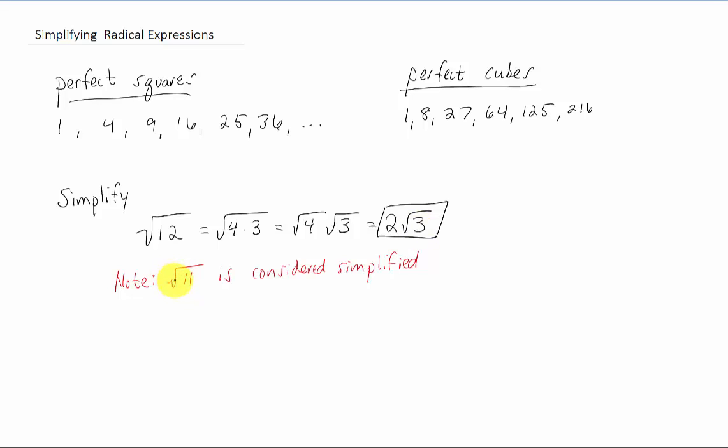You'll notice that you can't simplify the square root of three any further. And on that note, as an example, the square root of 11 is already considered to be simplified because you can't pull any perfect squares out of it.